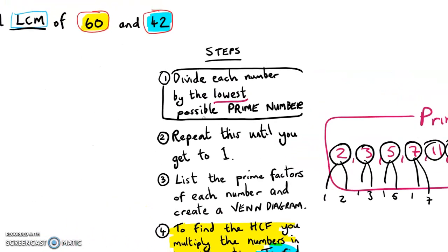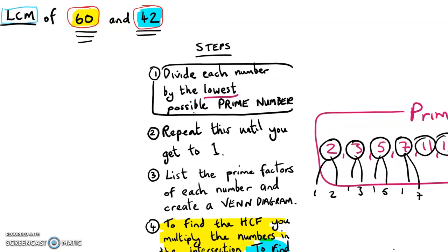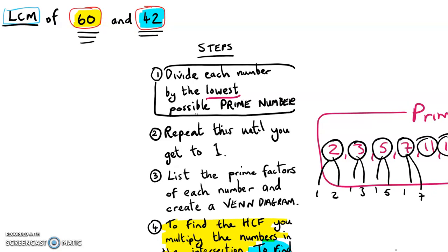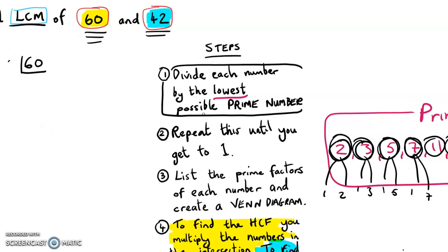So we're going to divide 60 and 42. Let's do 60 first. We're going to divide 60 by the lowest possible prime — whether that be 2, 3, 5, 7, 11, etc. So let's start with 2 because 2 is the lowest possible prime. We type that into the calculator: 60 divided by 2. And yes, it goes in — it goes in 30 times.